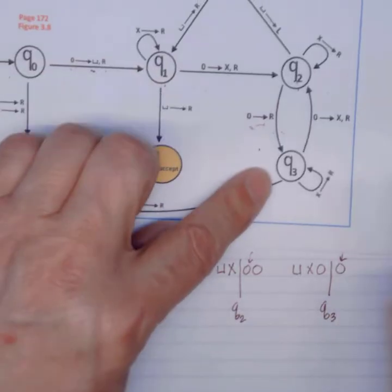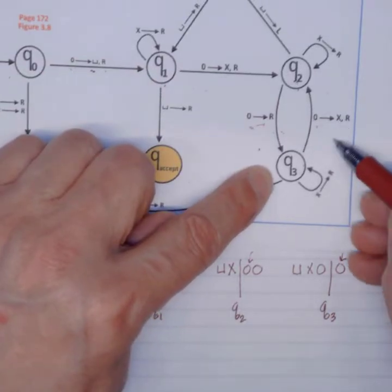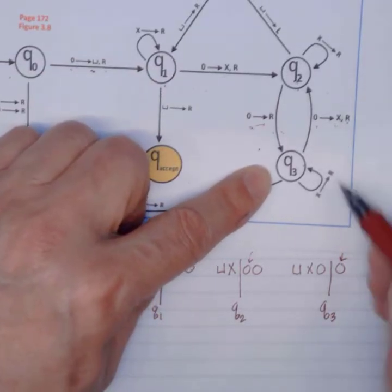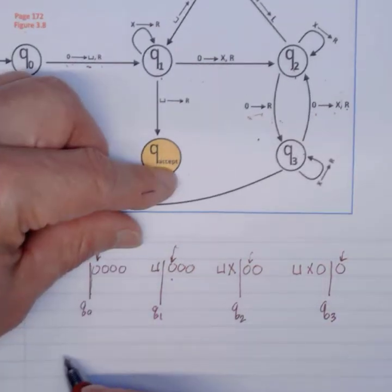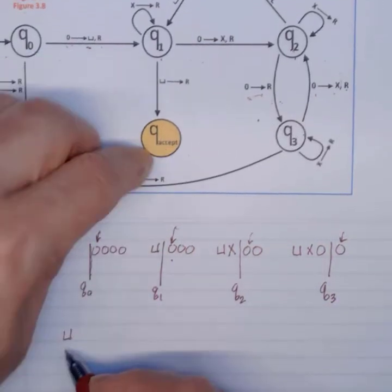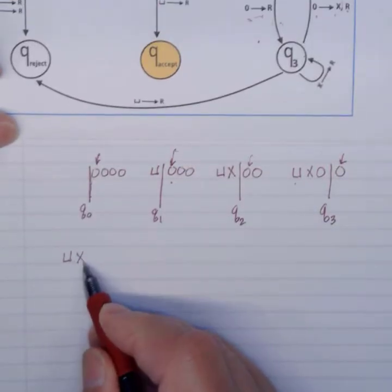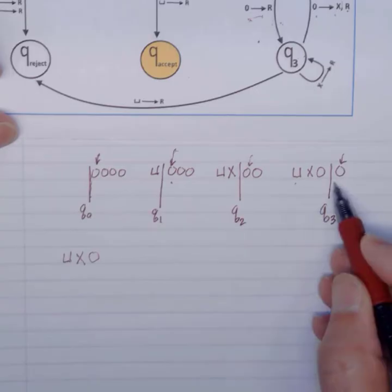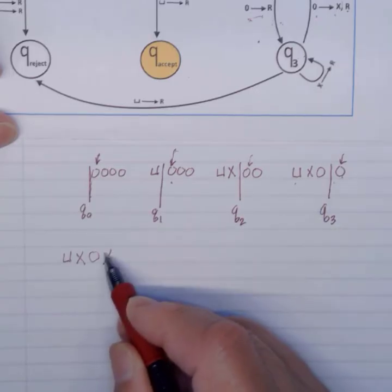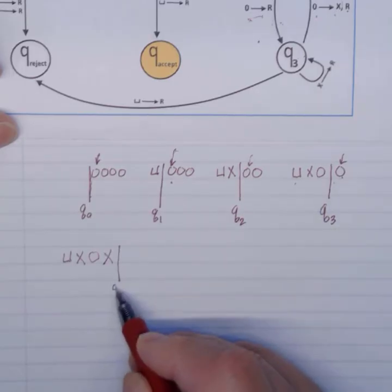So do I have a transition on a 0? Yes, we do. Here's the transition on a 0, but we convert that 0 to an X. So we are here now. Here's my blank. My X. My 0. My X. And I am back at Q2.